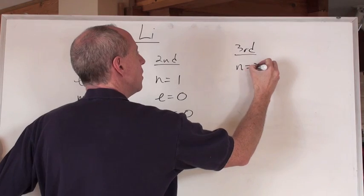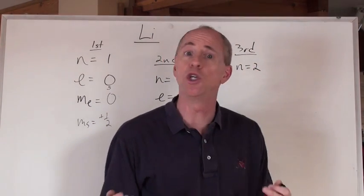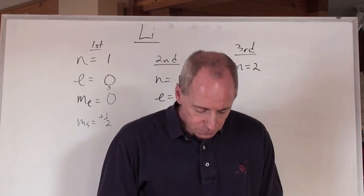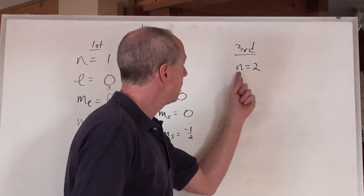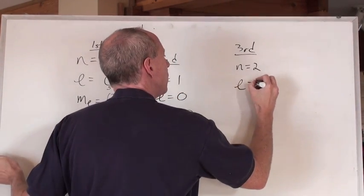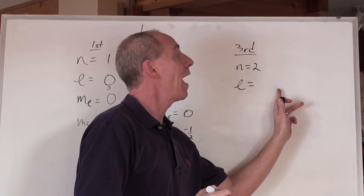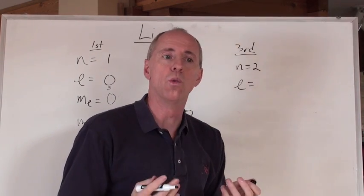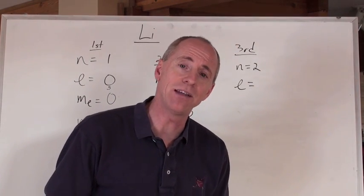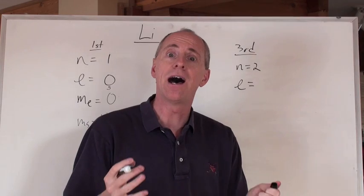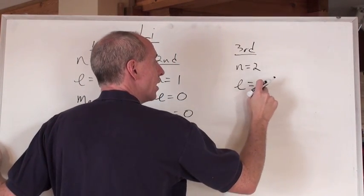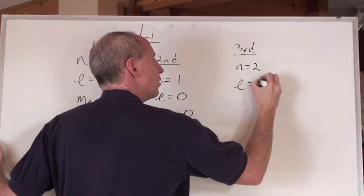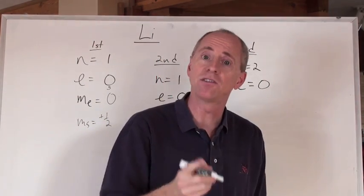So now, the third electron for lithium must be at n equals two. Now, what's allowable to have at n equals two? At n equals two, the L can equal zero and one. Now, it doesn't equal both here in this case. That electron's in one of those orbitals. And so at this energy level, the electron is in, we start with the zero. So that's the S orbital.